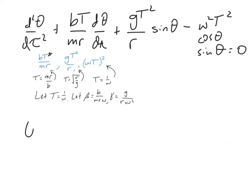So the equation becomes theta double dot, where now the double dot is denoting with respect to tau, plus beta theta dot, plus gamma sine theta, oh that's a minus, minus cosine theta sine theta equals zero.